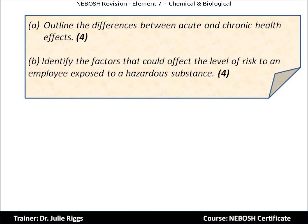Let's have a look at the first question. This question is divided into two parts. Part A: outline the differences between acute and chronic health effects — four marks. Part B: identify the factors that could affect the level of risk to an employee exposed to a hazardous substance — four marks.